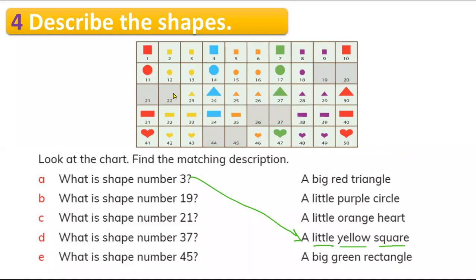Look at number B. What is shape number 45? You need to find it. The pattern is: a big heart, two small hearts, and again a big heart and two small hearts. Shape 45 will be a small orange heart — because we need an orange one. So you need to color it orange here.